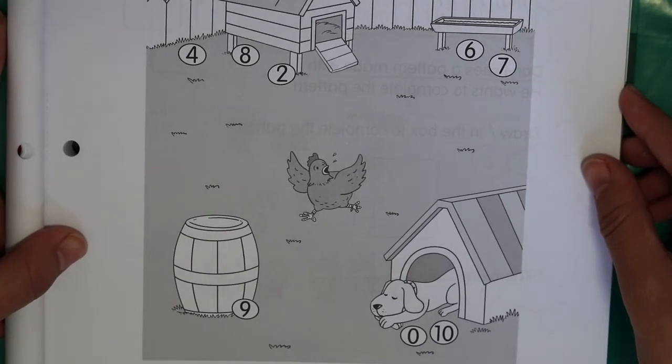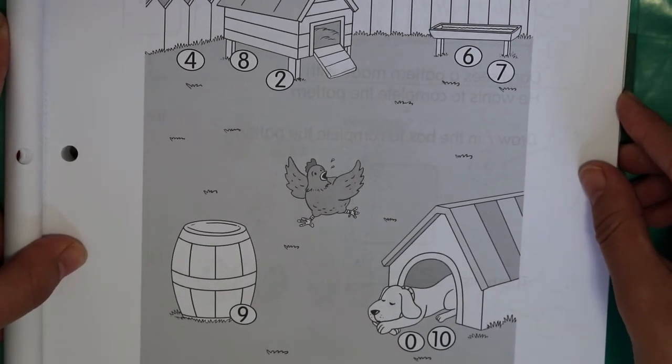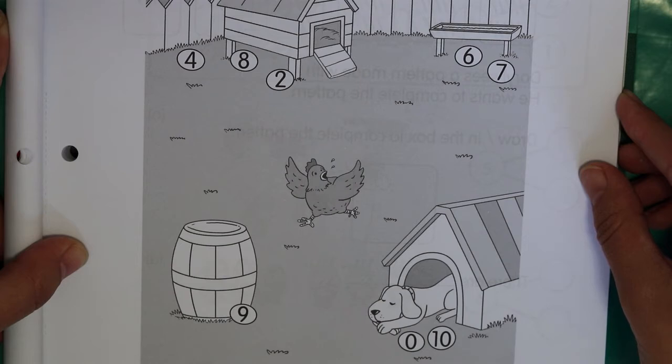Color the eggs that belong to mother hen. So if you see an egg with a number 3 on it, you can color it in. If you see an egg with a number 4 on it, you can color it in. If you see an egg with a number 5 on it, you can color it in.